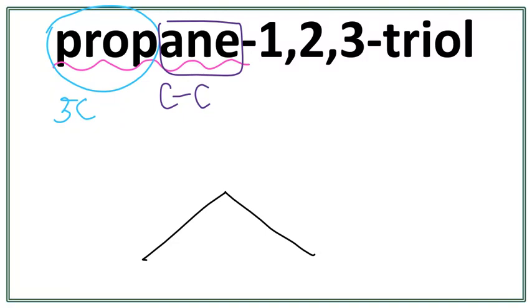Let's number these carbons. This is the first carbon, the second carbon, and the third carbon. This 'ol' here tells us that this is an alcohol, meaning that we have an OH group present—we have a hydroxyl present.